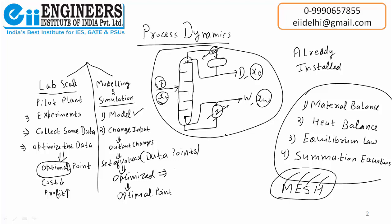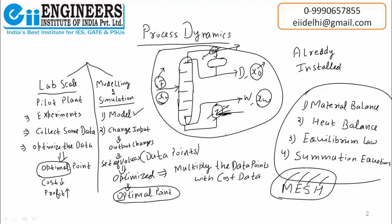To optimize, we multiply the data points with cost data. We know the cost of raw material feed, the selling price of the distillate, the cost of maintaining temperature, the steam supplied to the reboiler, and the heat removed from the condenser. We multiply the data points with this cost data to get the cost data, and ultimately the point at which cost is minimum and profit is maximum is where we design the distillation column.